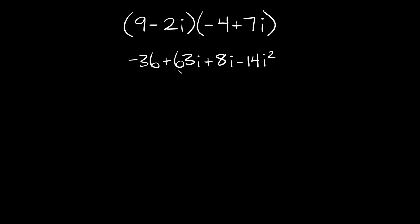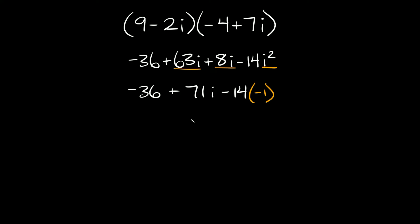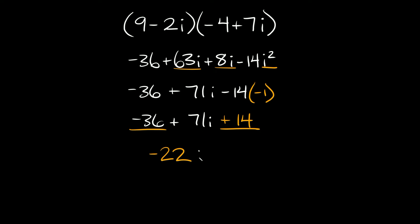So the first thing we can do here is combine like terms. We have 63i and 8i, so that's equal to 71i. So we're gonna have negative 36 plus 71i, and then minus 14i squared. Remember i squared is equal to negative 1, so this is the same thing as negative 14 times negative 1. So then we have negative 36 plus 71i plus 14. Combining like terms one more time, negative 36 and positive 14 is equal to negative 22. So our answer is negative 22 plus 71i.